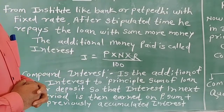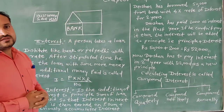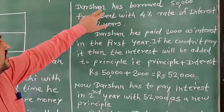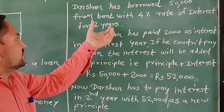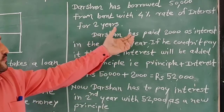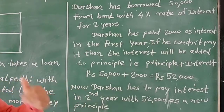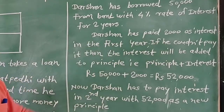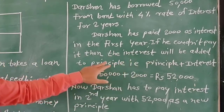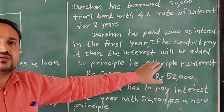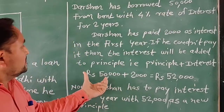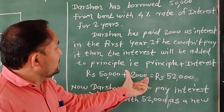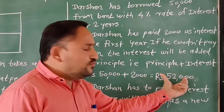We study this from examples. If Darshan has borrowed 50,000 from a bank at 4% rate of interest for 2 years, Darshan has paid 2,000 as interest in the first year. If he couldn't pay, the interest will be added to the principal: 50,000 plus 2,000 equals 52,000.